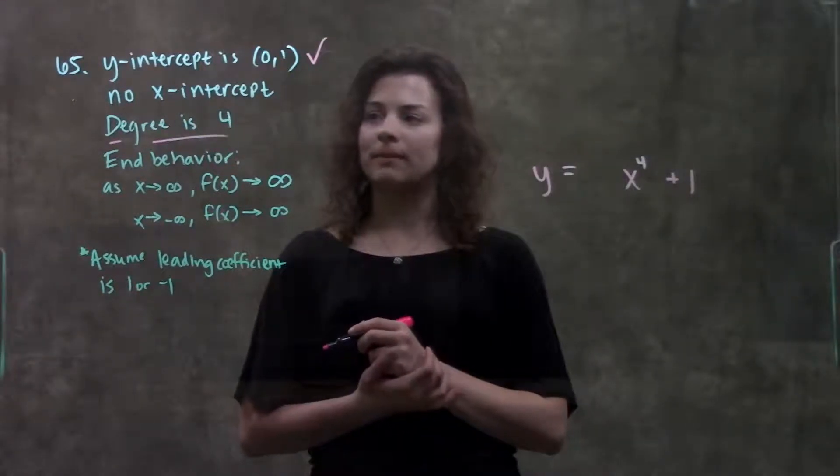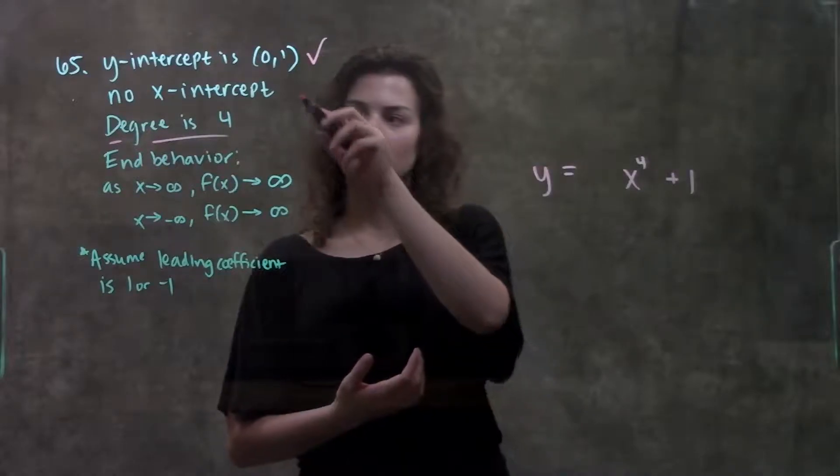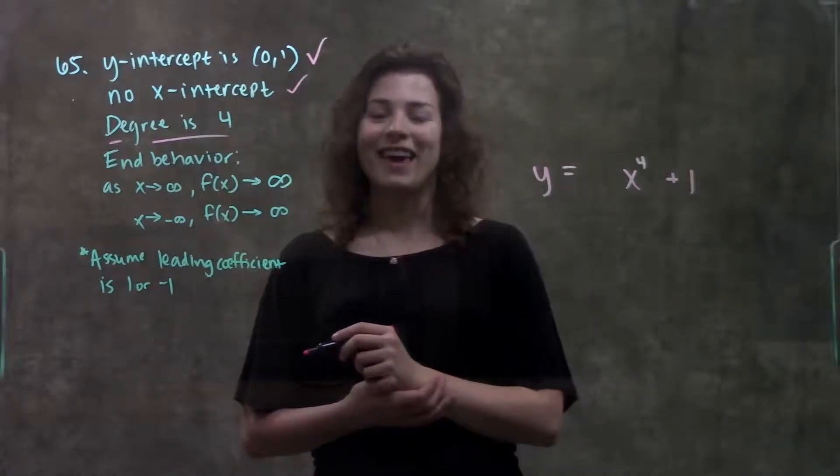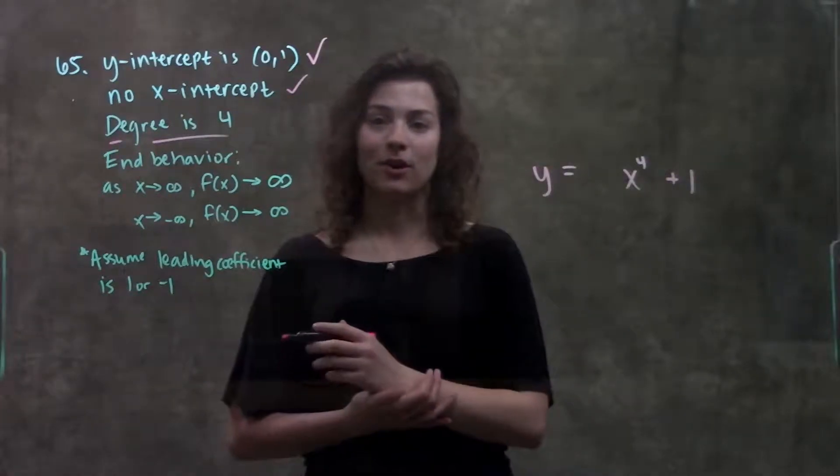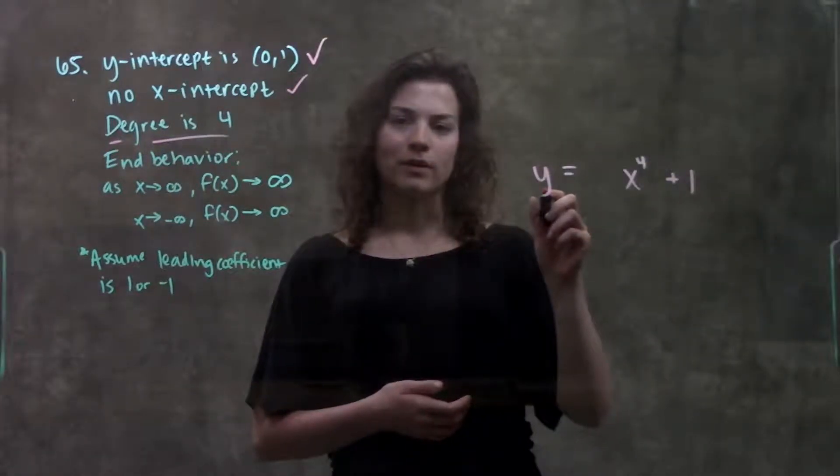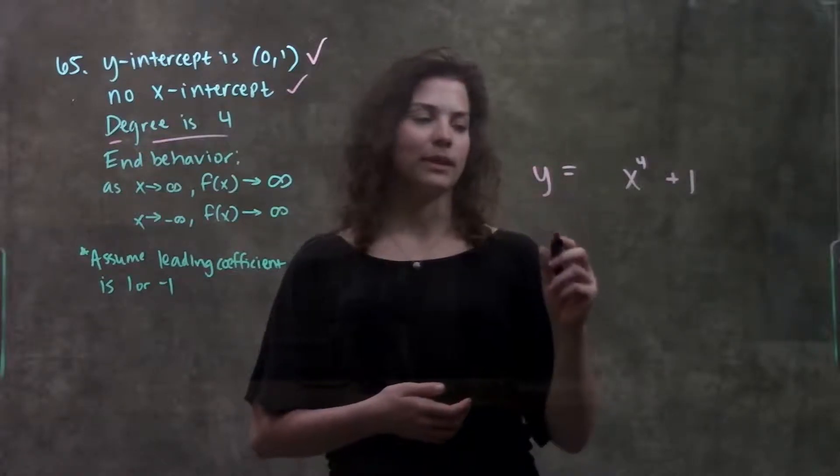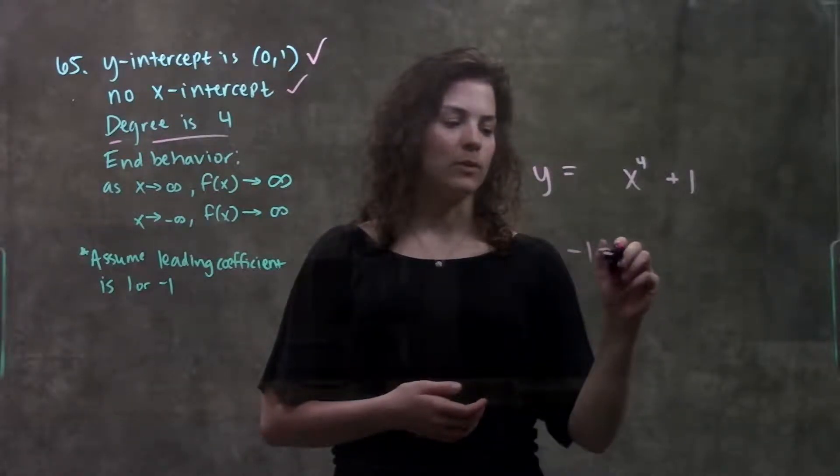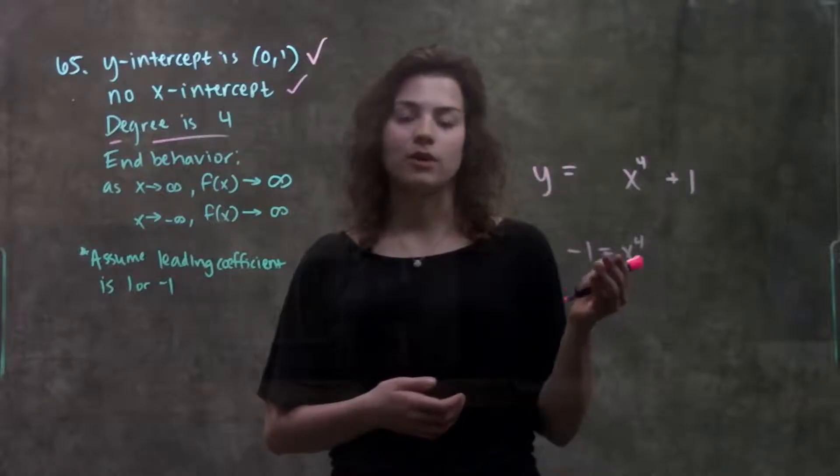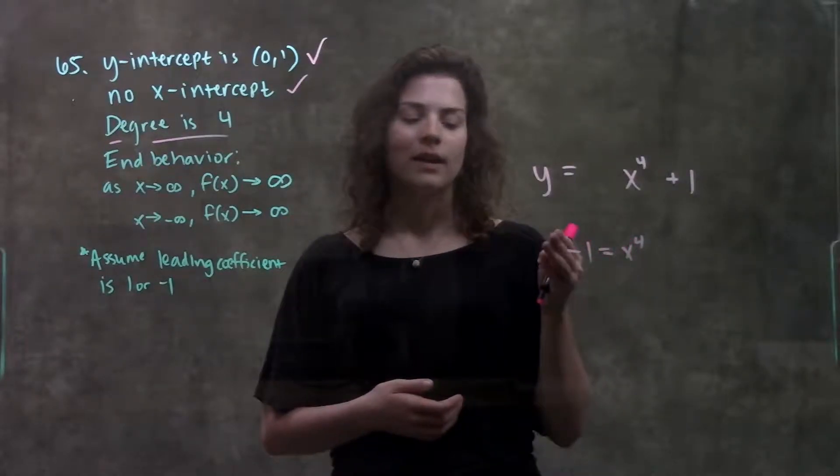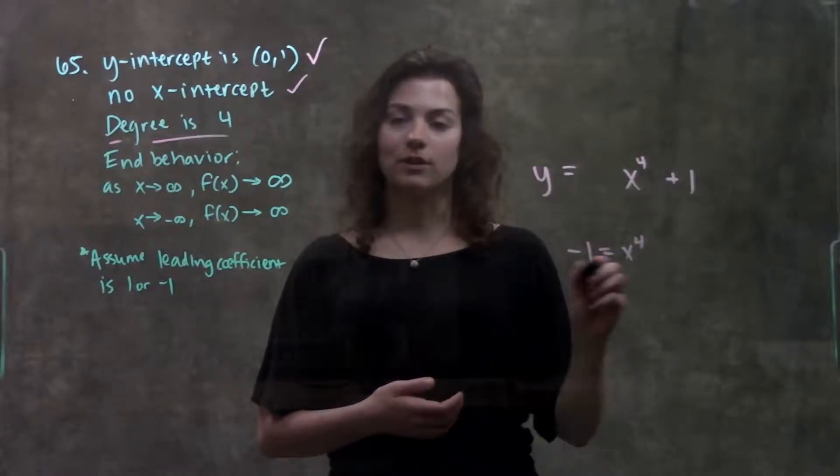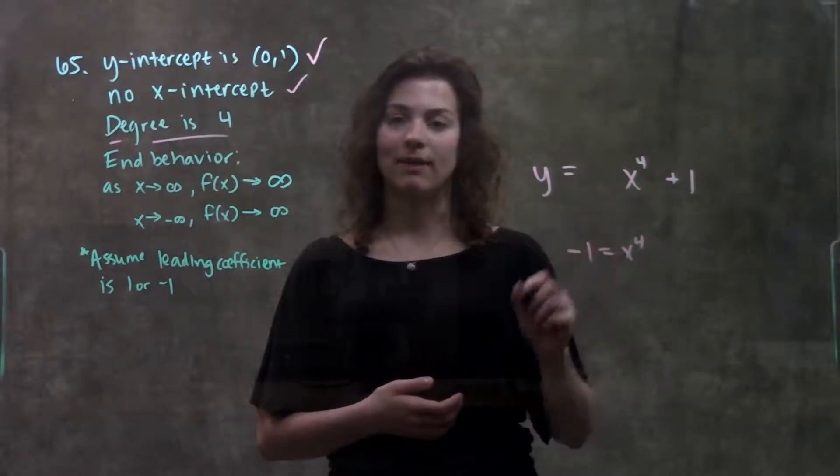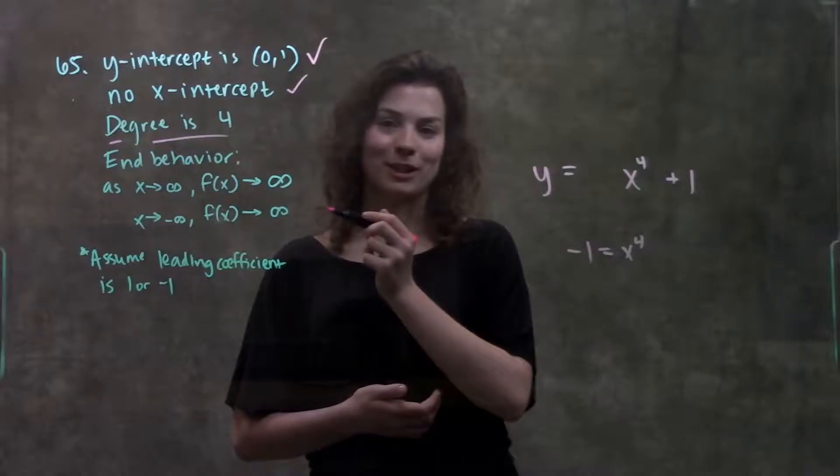For my x intercept, I don't have one, so I don't really need to worry about it. If you're curious though, this function as it's written right now works for my no x intercept. Because if I were to subtract 1 over to the other side, when I set y equal to 0, I'd get negative 1 equals x to the 4th. There's no number when raised to the 4th power that'll give me a negative value, or it'll give me negative 1. So, this means that there's no x intercept for this function that I've written here. So, that's good too.